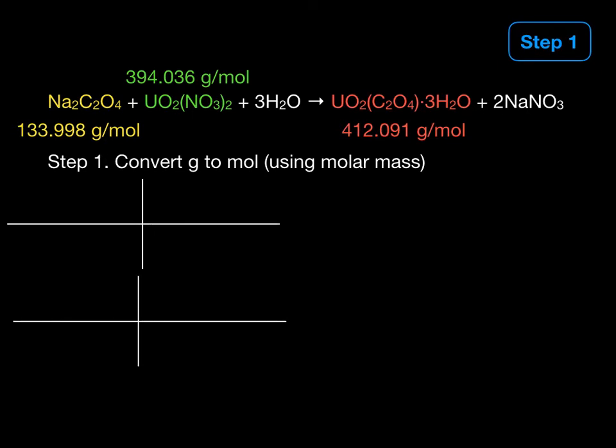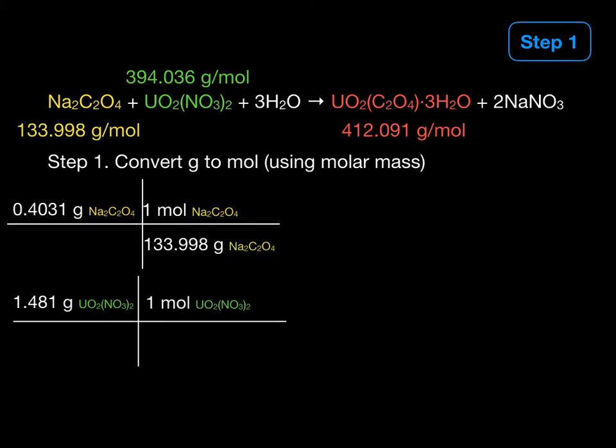Now, we have 0.4031 grams of sodium oxalate in yellow and 1.481 grams of uranyl nitrate in green. So to convert from grams to moles, we use the molar masses. And notice how the moles goes up on top and the molar mass of sodium oxalate on the bottom. And similarly, we have moles of uranyl nitrate and the molar mass of uranyl nitrate on the bottom. So the units nicely cancel there to give us moles of reactant.